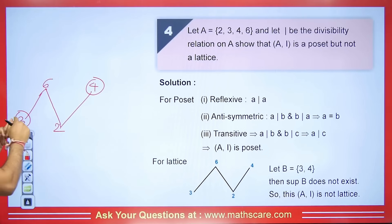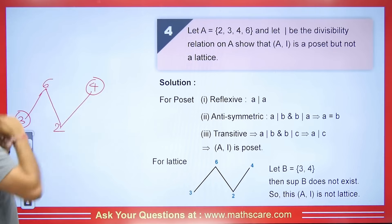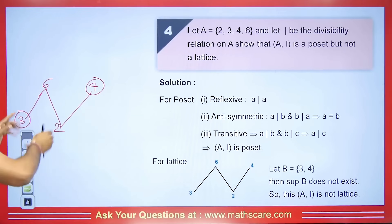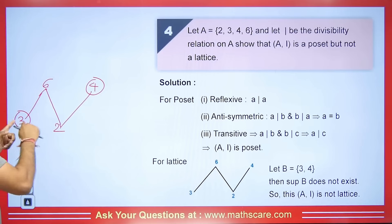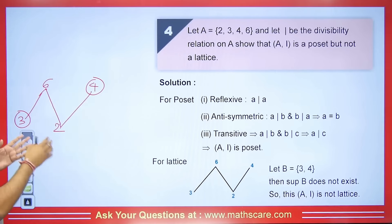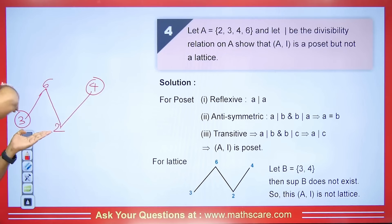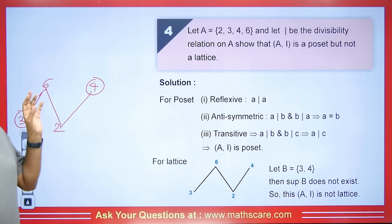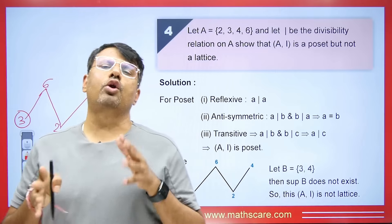The upper bound of 3 and 4 does not exist — to have an upper bound, both elements must relate to it, but 4 doesn't divide 6. There is no upper bound for these two elements, so the least upper bound doesn't exist. For the lower bound of 3 and 4: 2 relates to 4 but doesn't relate to 3. So we won't even have a greatest lower bound. Since neither the least upper bound nor the greatest lower bound exists, this is not a lattice.